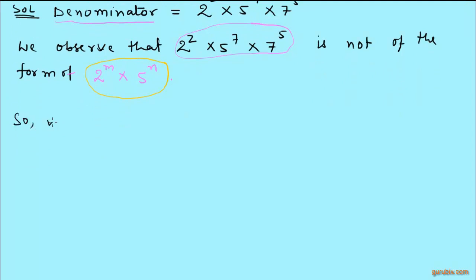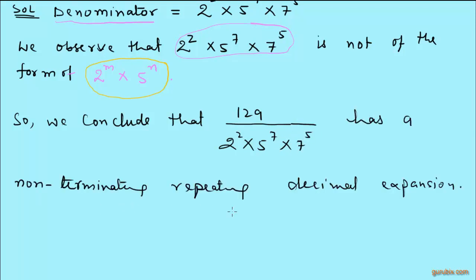we conclude that 129 over 2 to the power 2 multiplied by 5 to the power 7 multiplied by 7 to the power 5 has a non-terminating repeating decimal expansion. This is the solution of the question.